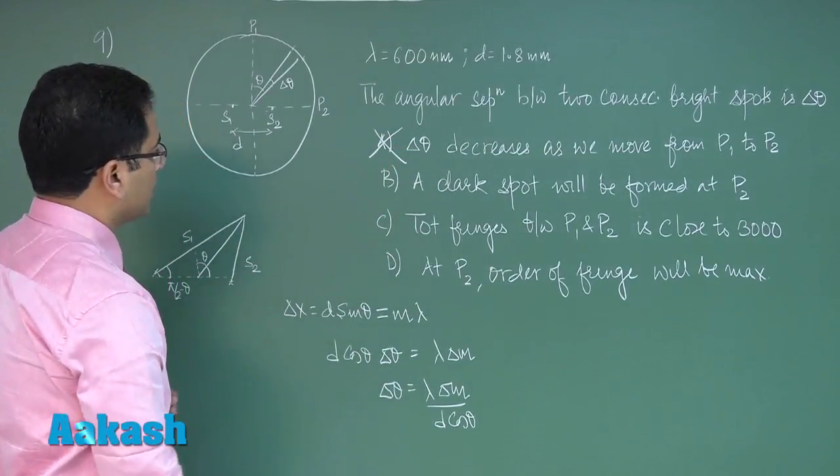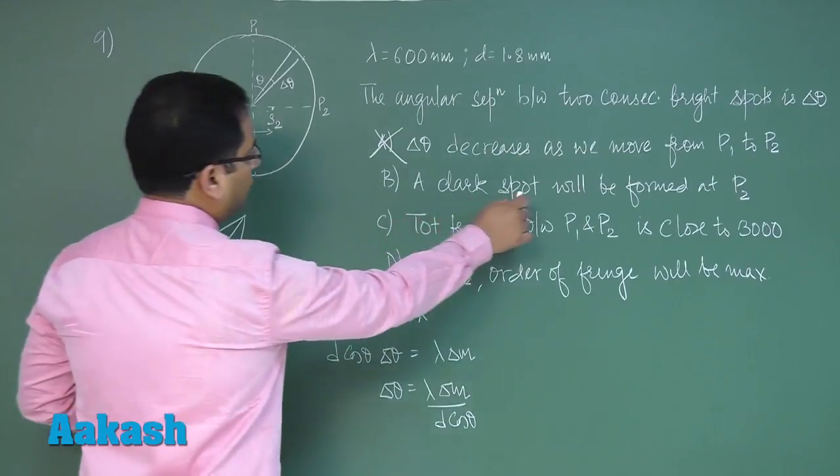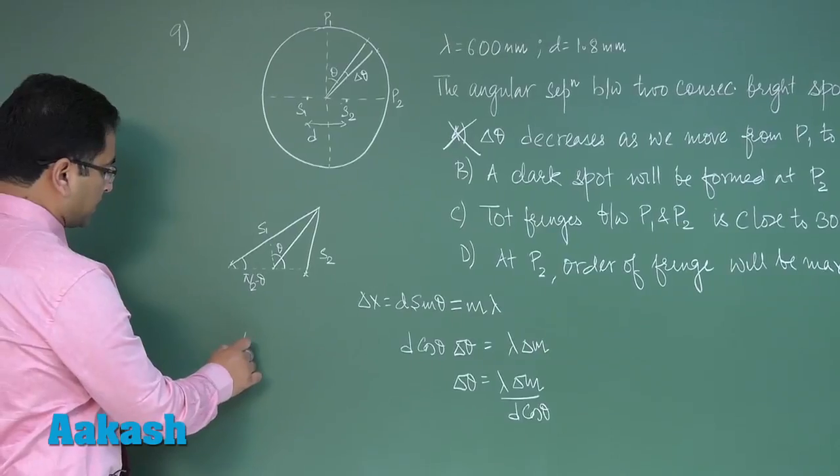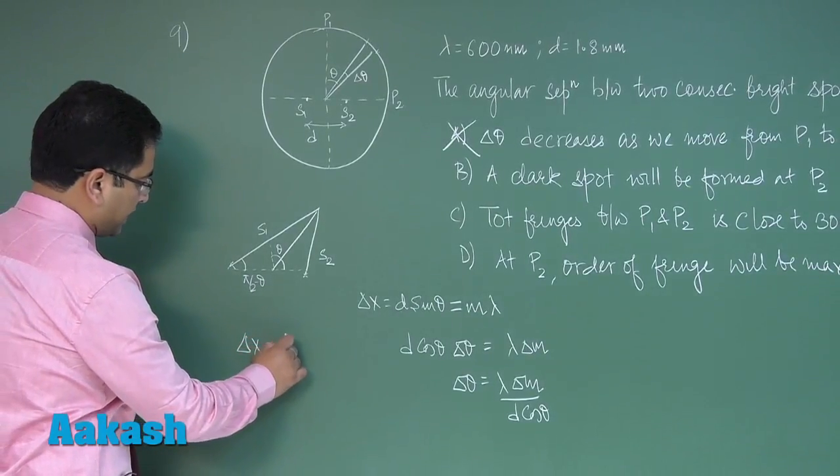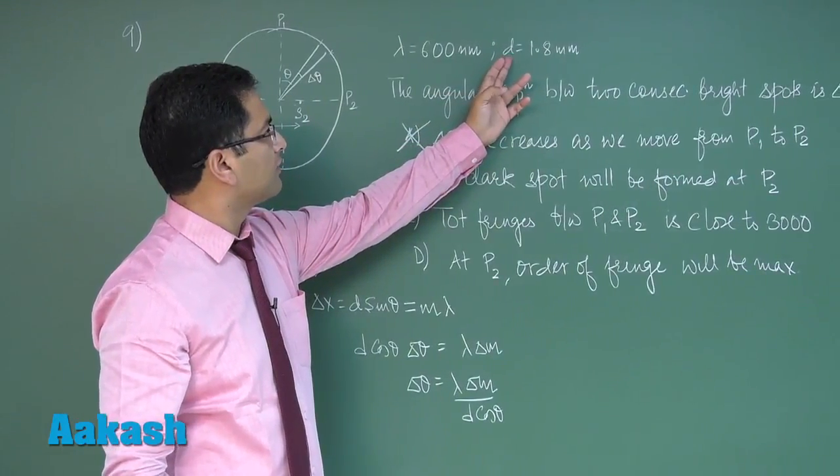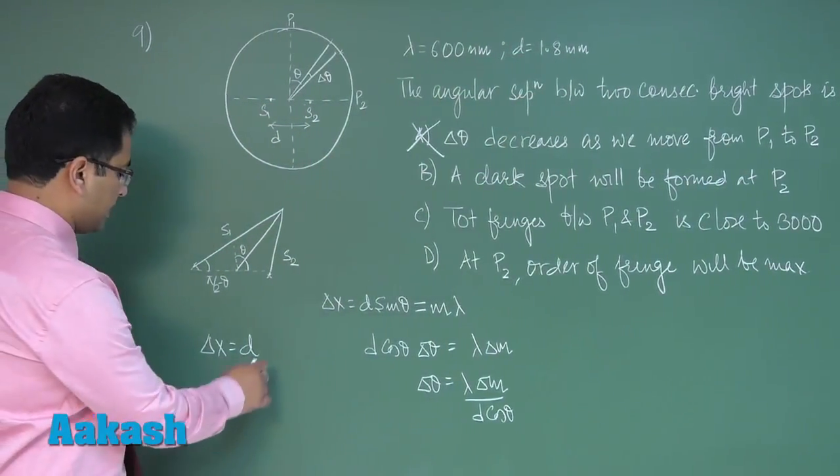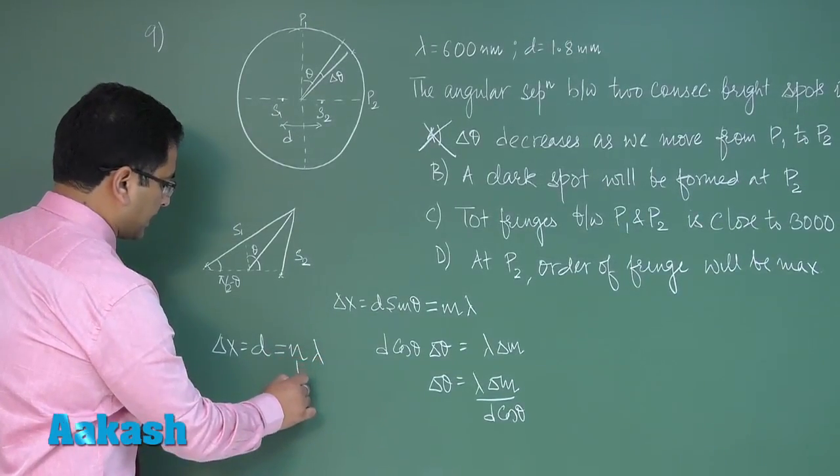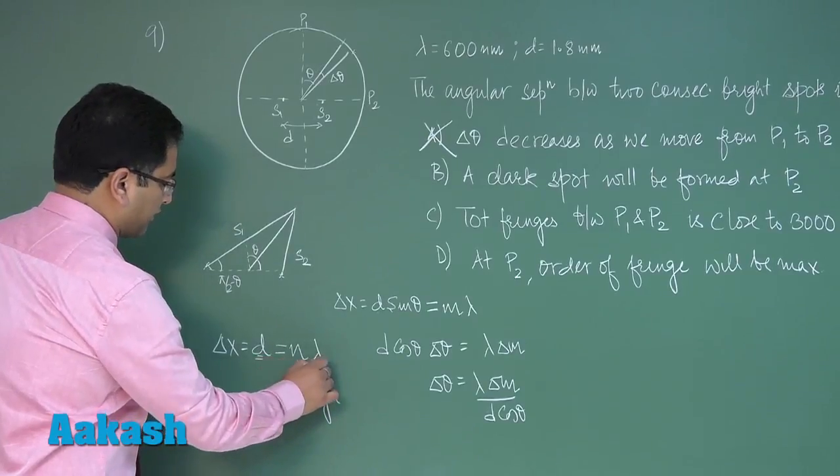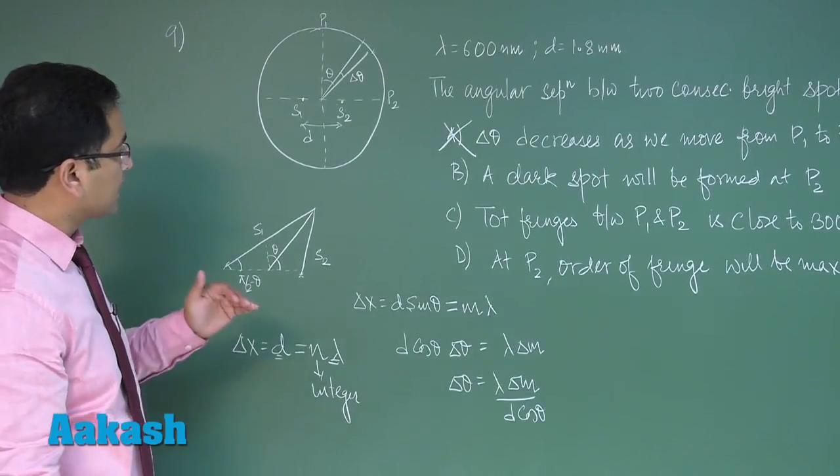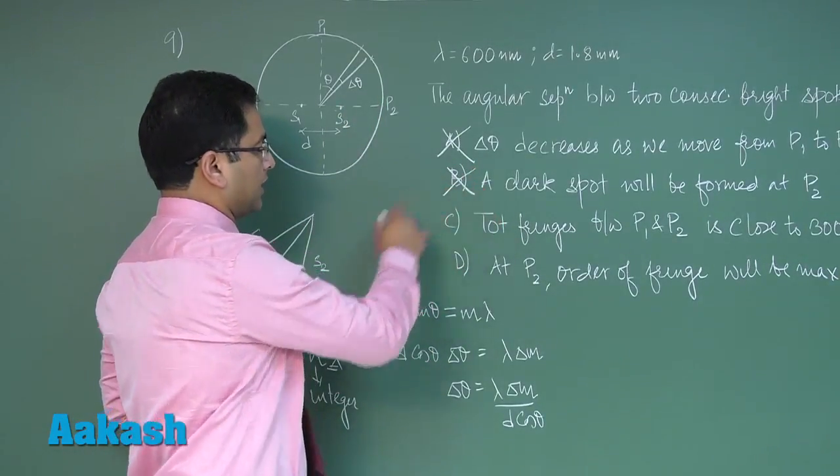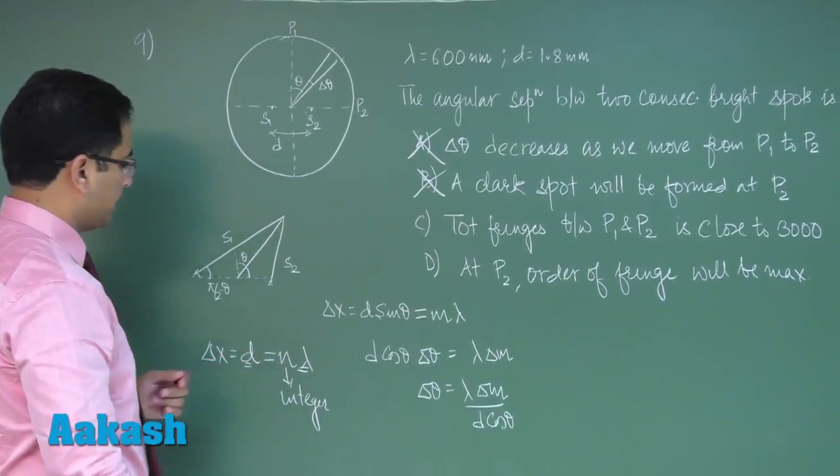Let's say a dark spot will be formed at P. At P, the path difference is straightway d, and it's very easy here if you see the data of d and Lambda, that d would be n times Lambda and that n would be an integer because d and Lambda are very easily relatable. So in that situation, P2 is a point of bright, so B would be incorrect.